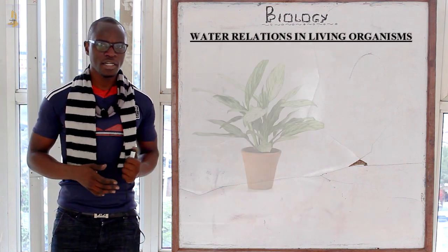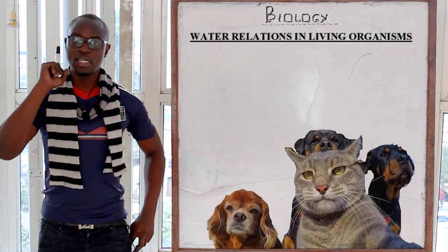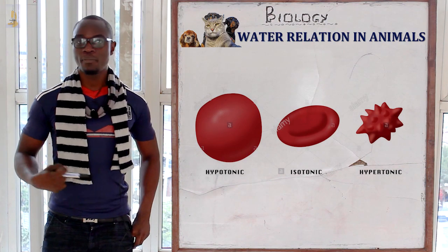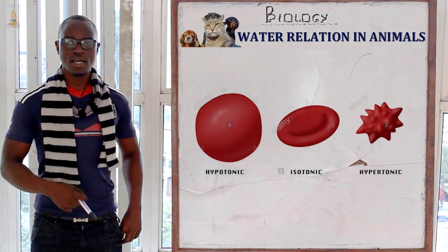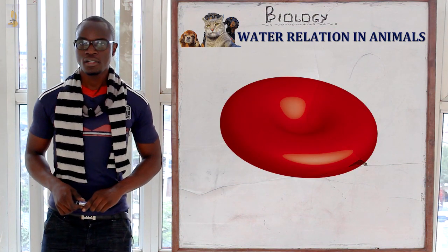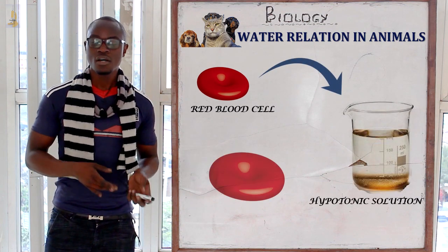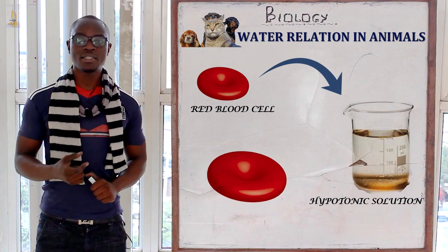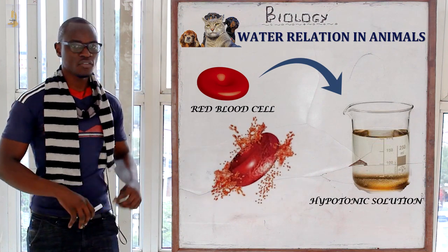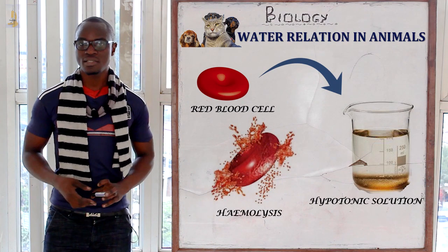Let's look at the water relations in plants and animals, starting with animals. We will consider a red blood cell. When we take a red blood cell and place it in a hypotonic solution, the red blood cell will absorb water and then it will burst. The bursting of the red blood cell is called haemolysis.